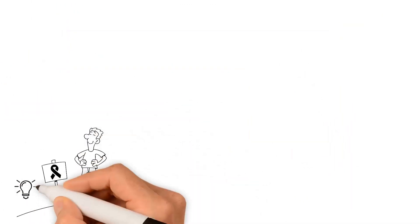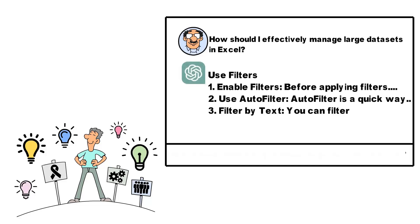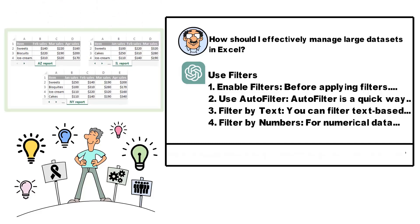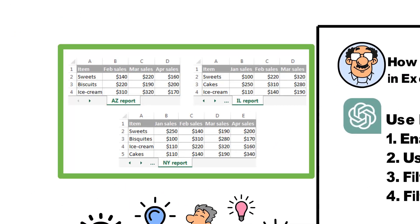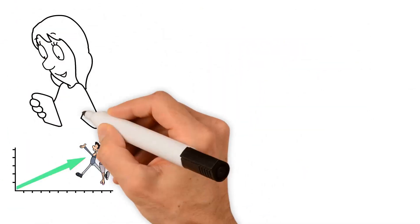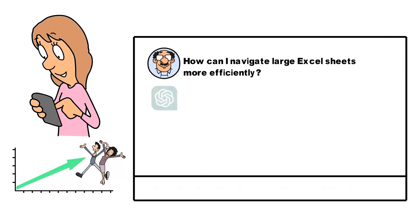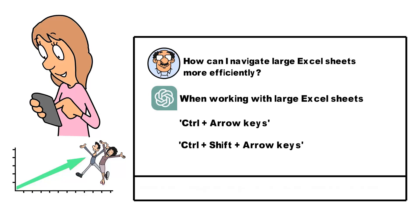Inquiring about Excel best practices could take the form of prompts such as, how should I effectively manage large data sets in Excel? ChatGPT may suggest using filters to display only the data that meets certain criteria, or splitting your data across multiple sheets for improved readability and manageability. Moreover, a request for productivity tips might look like, how can I navigate large Excel sheets more efficiently? ChatGPT could suggest keyboard shortcuts, such as Ctrl plus arrow keys to move around quickly, or Ctrl plus shift plus arrow keys to select a range of cells swiftly.